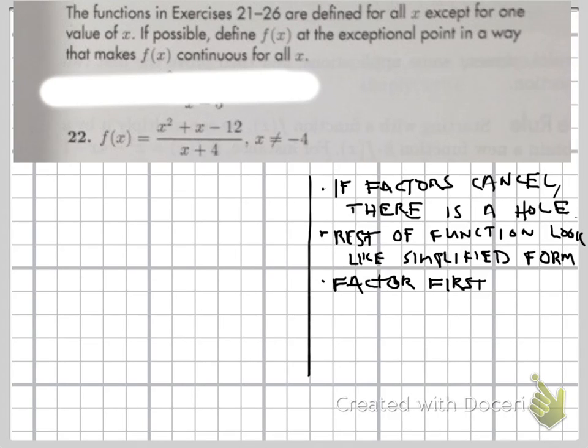So this problem we have a rational function which is one polynomial on top of another and it's telling that the point x equals negative 4 is undefined.